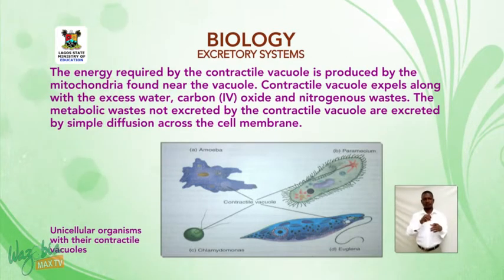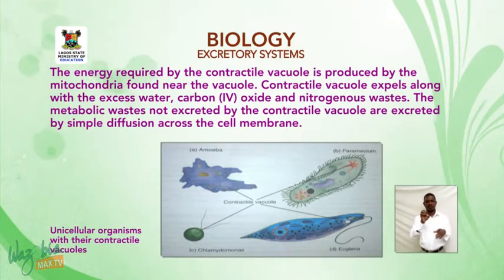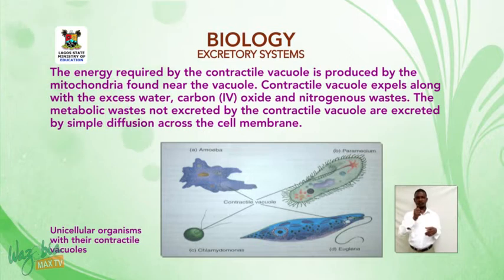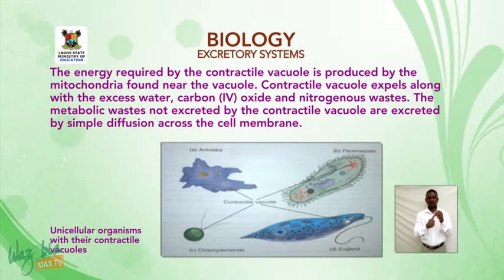The contractile vacuole expels excess water along with carbon dioxide and nitrogenous wastes. The metabolic wastes not excreted by the contractile vacuole are excreted by simple diffusion across the cell membrane.